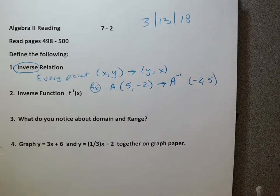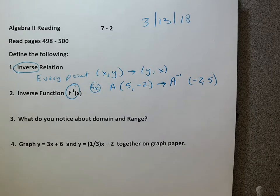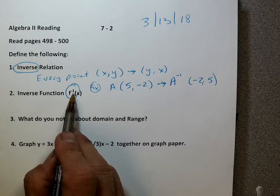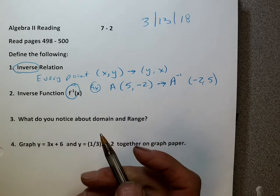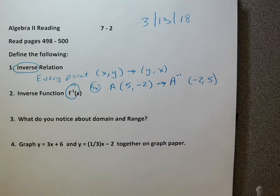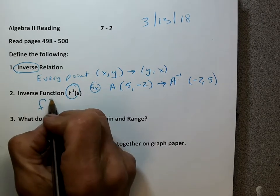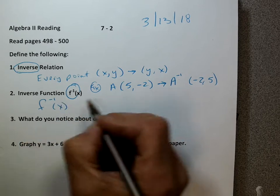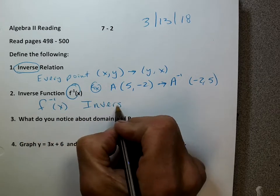What we talk about is this little symbol. If it is a function, if it's an inverse function, we use f to the negative 1 of x — that's the symbol for inverse function. Not everything has an inverse function. It's got to pass the vertical line test — you can't have two prices for one latte. Not everything has an inverse, but if it does, we use f inverse of x as the symbol meaning it's an inverse function.